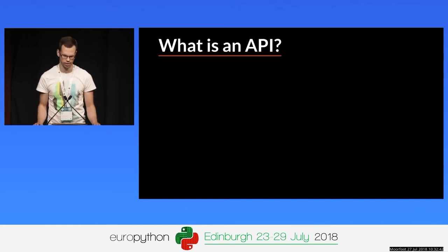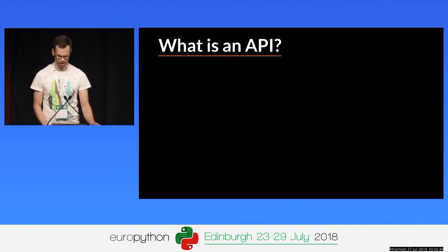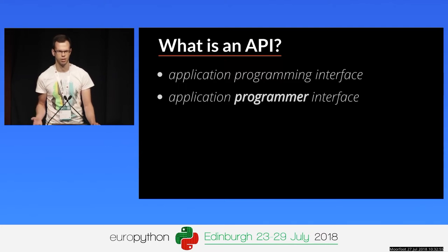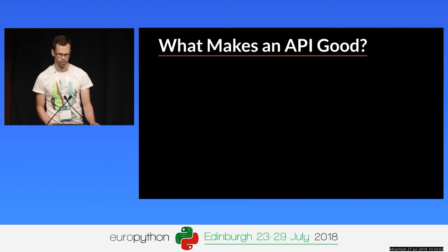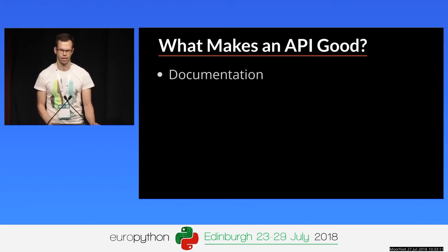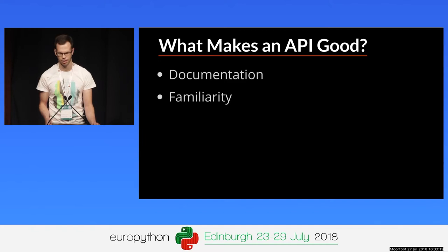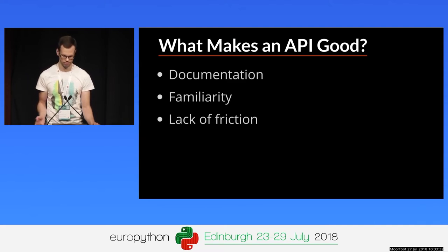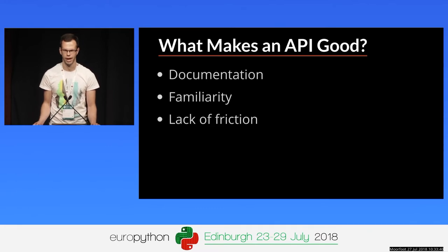Let's begin with the definition of API. Usually API is defined as application programming interface, but I think a better one might be application programmer interface, because when you think about it, APIs are really sort of user interfaces for other developers. Good APIs need helpful documentation, should use standards to bring familiarity, and should minimize issues or friction for the user. This talk targets mostly web APIs, but much of what I'm discussing is also applicable to other projects, packages, and codebases in general.